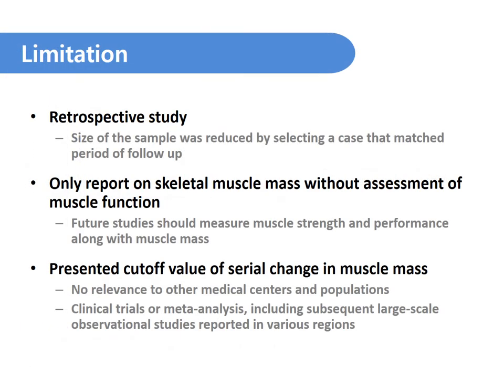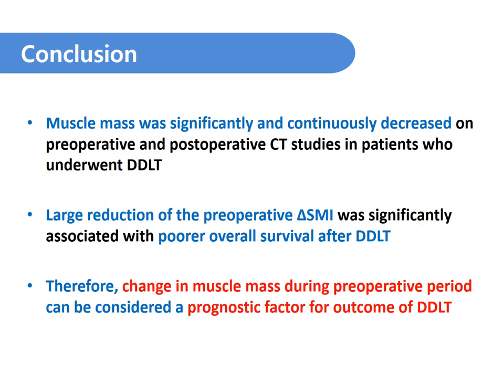The limitations of our study include its retrospective and single-center design, only reporting on skeletal muscle mass without assessment of muscle function, and the presented cut-off value of serial change in muscle mass may have no relevance to other medical centers and populations, so further study is needed. In conclusion, muscle mass was significantly and continuously decreased on preoperative and postoperative CT scans in patients who underwent DDLT. A large reduction in the preoperative delta SMI was significantly associated with overall survival after DDLT. Therefore, change in muscle mass during the preoperative period can be considered as a prognostic factor for outcome of DDLT.